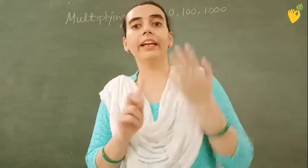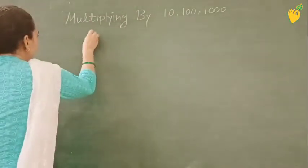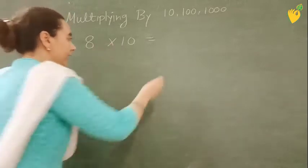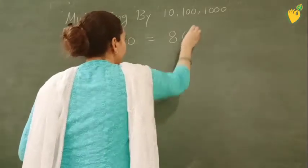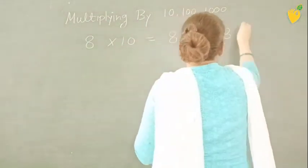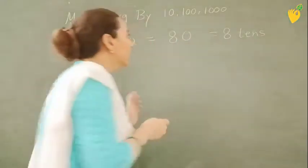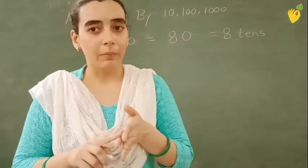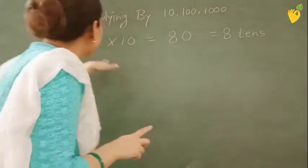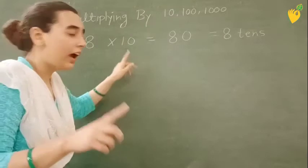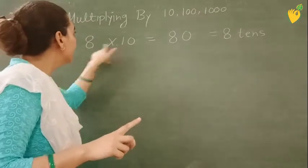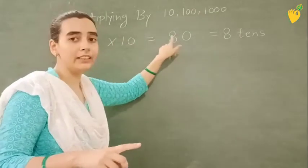Suppose we have to multiply 8 by 10. 8 is multiplied by 10. All of you know that 8 tens are 80. It is also known as 8 tens.